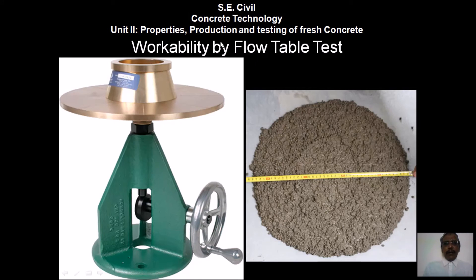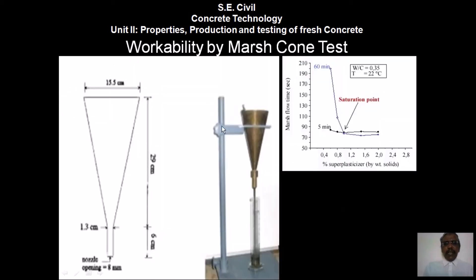Workability by flow table test: concrete is placed on a disc and the flow is measured in the X and Y horizontal directions. If required, diagonal measurements can also be taken and averaged.